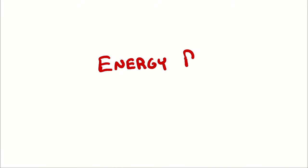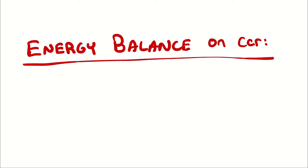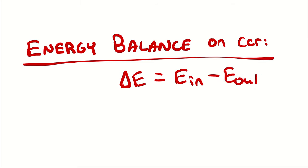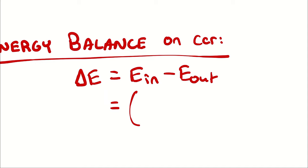Now that we have a system defined, we can perform our energy balance — I abbreviate energy balance as EB. We are performing an energy balance on the car, and as all energy balances, we begin with delta E equals E in minus E out. The energy change of the vehicle equals the energy entering the vehicle minus the energy exiting the vehicle. The energy can enter as heat transfer or work, but it isn't important that we distinguish that because we know the energy is entering at a rate of 185 horsepower.